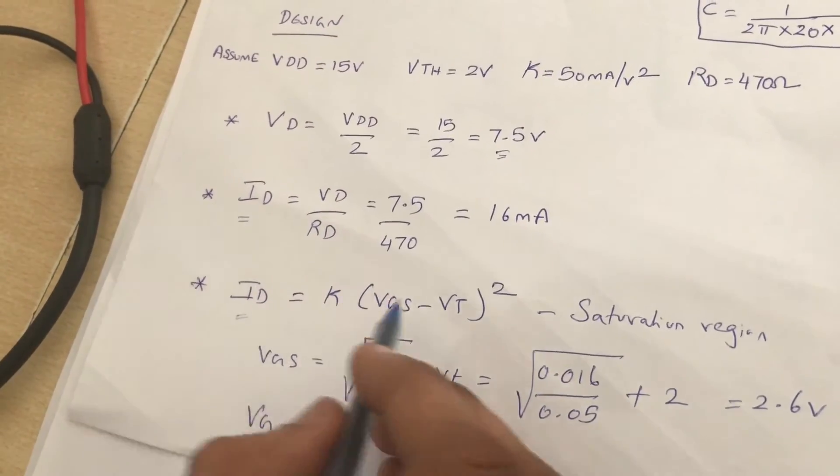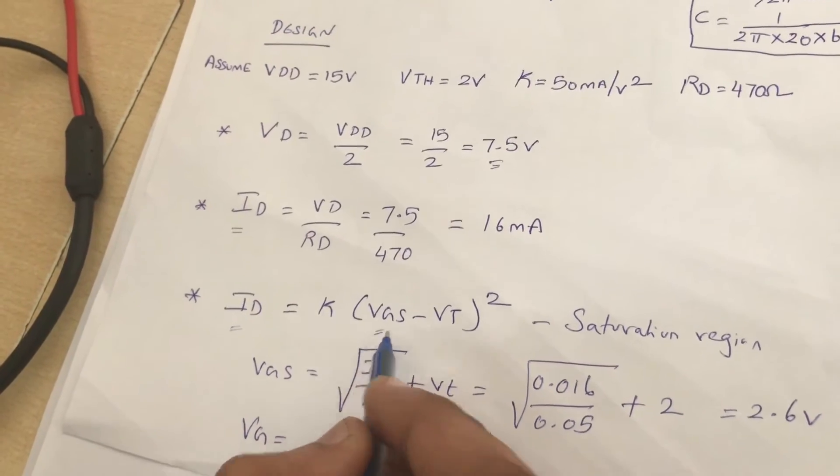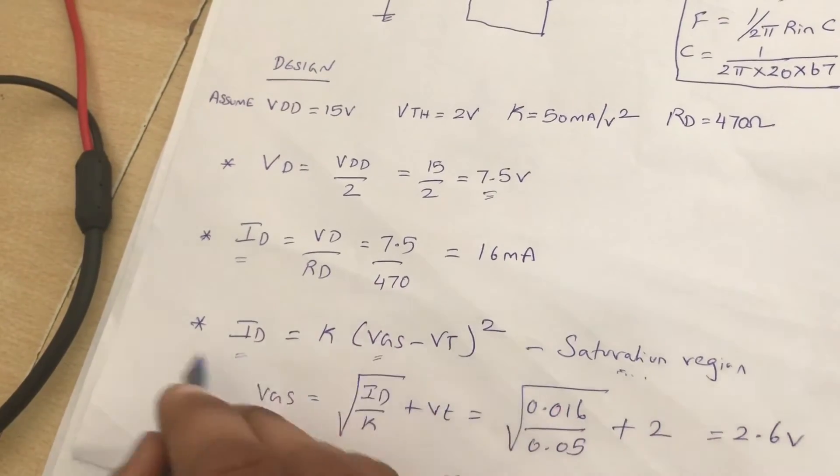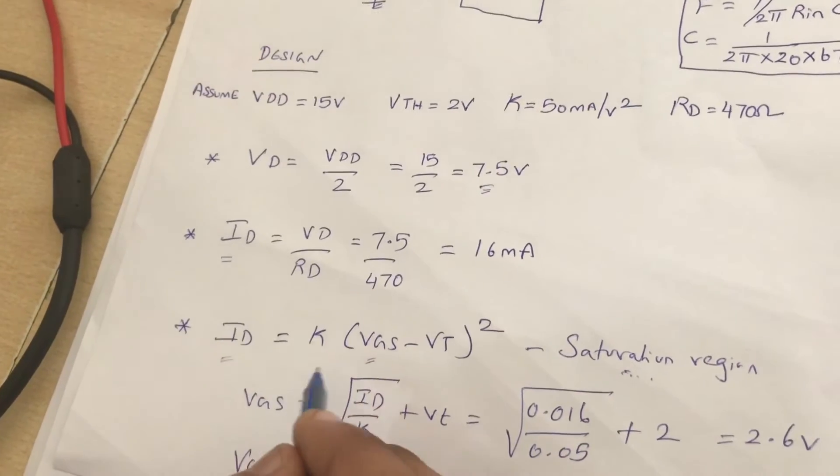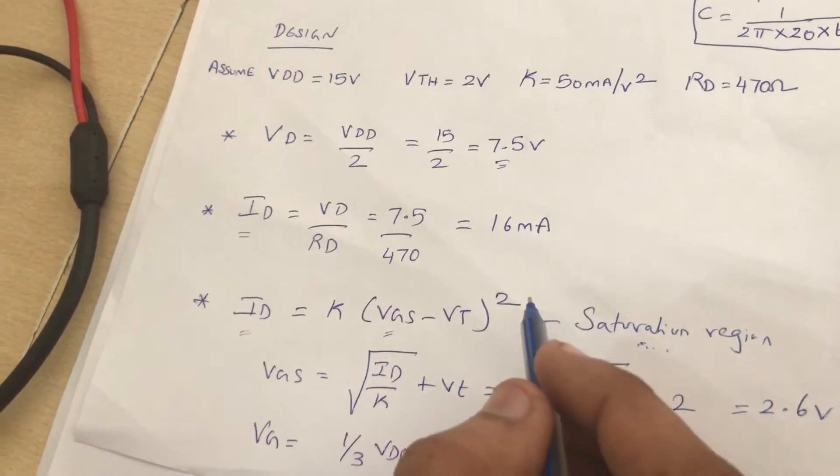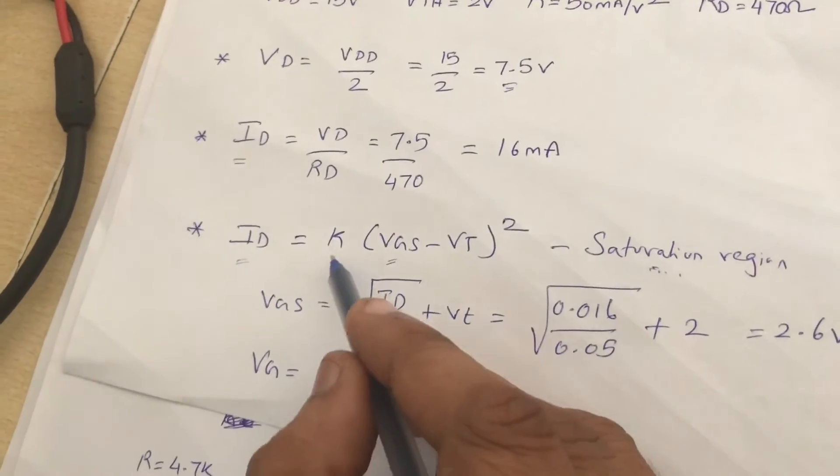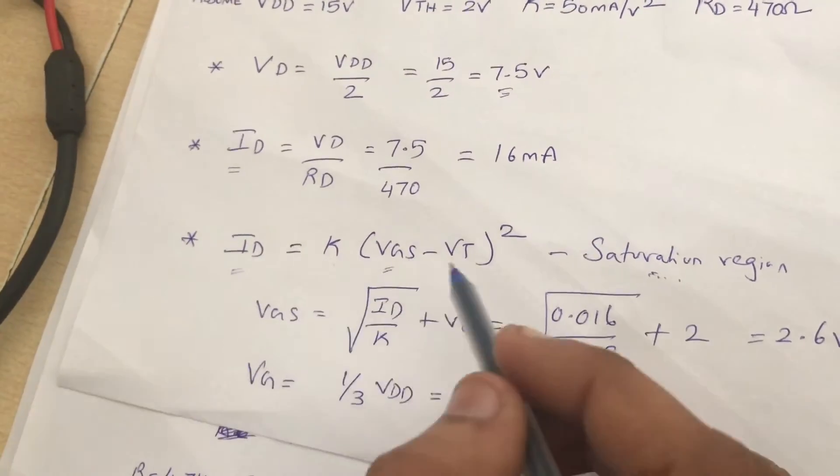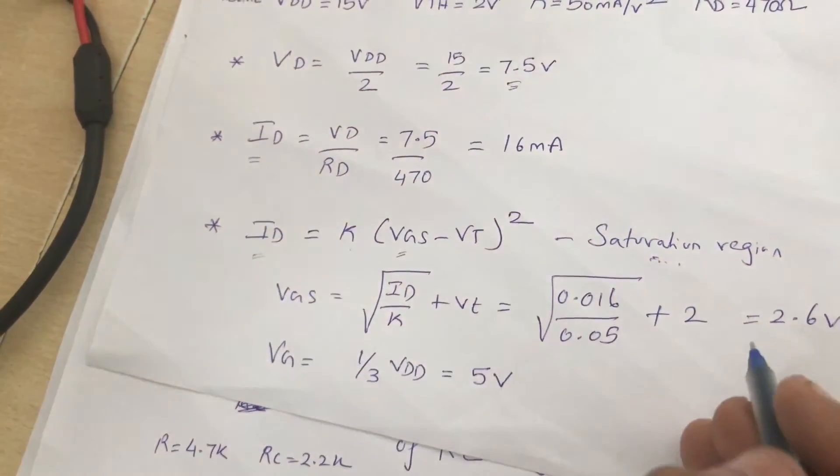Once we have the drain current, we are going to calculate the gate-source voltage by using the saturation region current equation, where ID is equal to K times (VGS minus VT) squared. Given K and the given value of ID and VT, we can calculate VGS, which comes to around 2.6 volts.